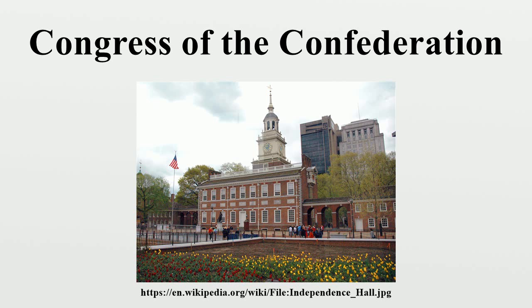The last meeting of the Continental Congress was held March 2, 1789, two days before the new constitutional government took over. Only one member was present at said meeting — Philip Pell, an ardent anti-federalist and opponent of the Constitution, who was accompanied by the Congressional Secretary. Pell oversaw the meeting and adjourned the Congress.